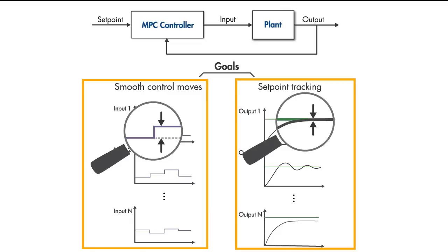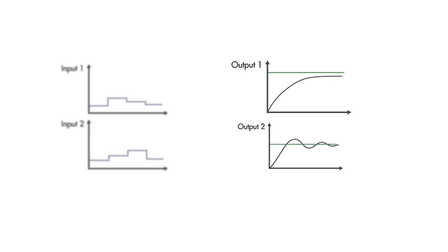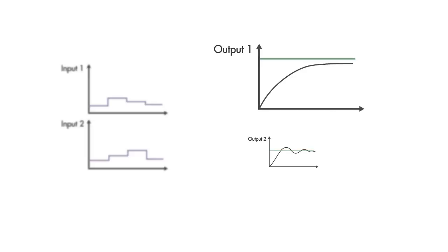We not only weigh these two groups relative to each other, but we also adjust relative weights within the groups as well. For example, if in this 2x2 system it is more critical to perform reference tracking of the first output than the second output, we assign a larger weight to the first output and the ratio between the outputs is greater than 1.